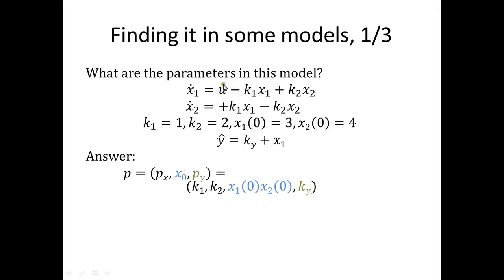You might ask: isn't u a parameter too? In this introductory course we reserve the letter u for input, just as we reserve y for measurements. If we didn't have that convention, u would be a parameter as well. In a way you can view the input as a parameter that is usually changing over time and whose changes you know — but by convention, only k1 and k2 are the px parameters here.